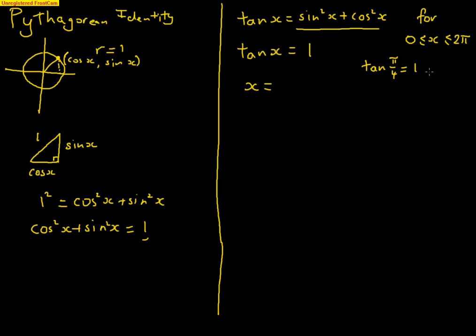And we know that the period of tan, the period of tan is pi. So it repeats every pi radians. So, x is equal to pi on 4 plus some multiple of pi, where that multiple could be 0, plus or minus 1, plus or minus 2, etc.